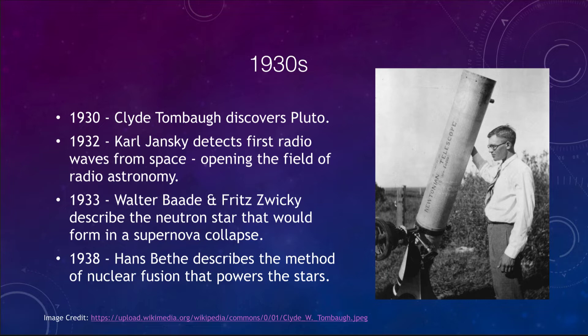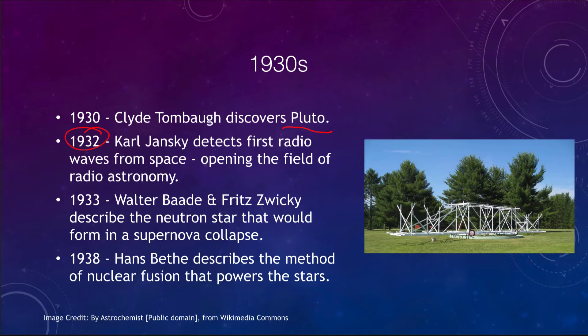Moving into the 1930s — in 1930, Clyde Tombaugh discovered Pluto, which at that point was considered the ninth planet. It was detected by a very careful search looking for an object beyond Neptune. A couple of years later, in 1932, Carl Jansky brought us the beginnings of radio astronomy. He detected radio waves from the center of our galaxy and opened up a whole new field. Before 1932, the only astronomy done was through visible light.